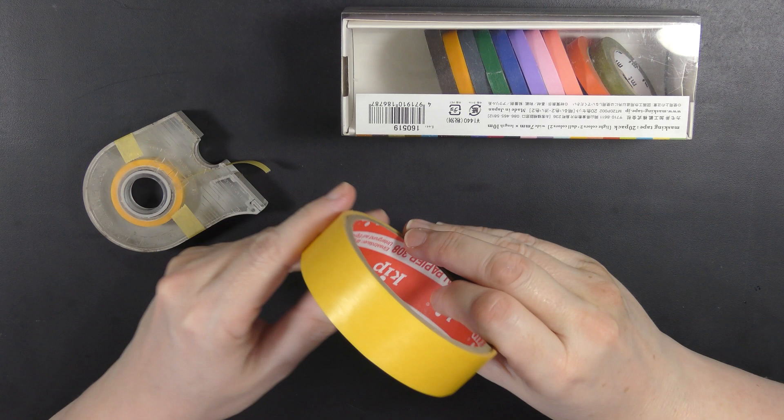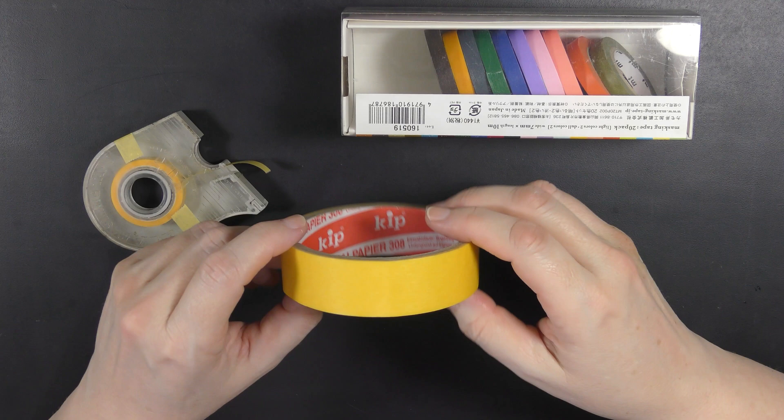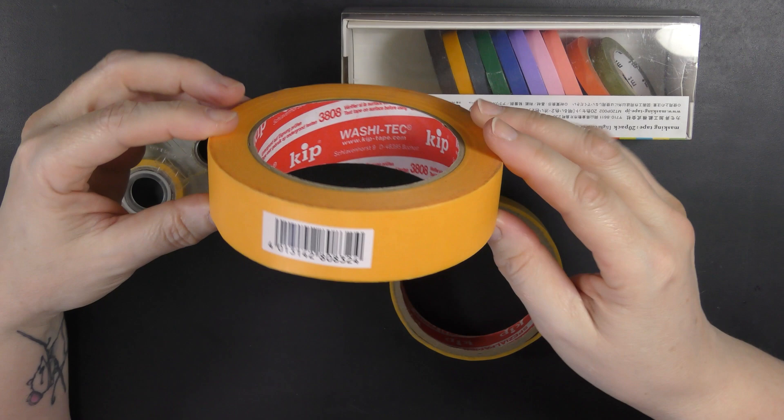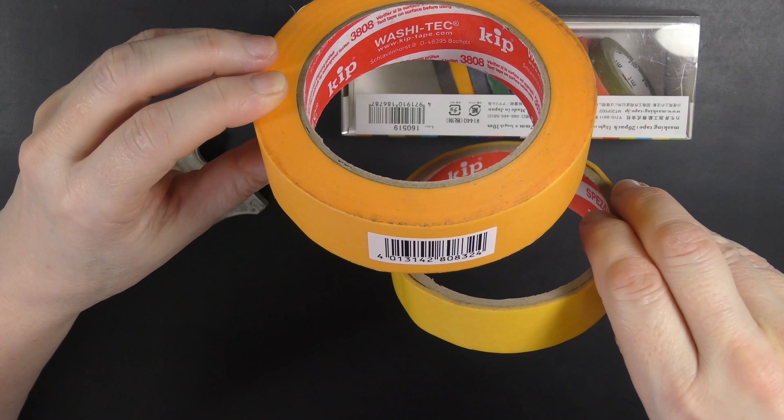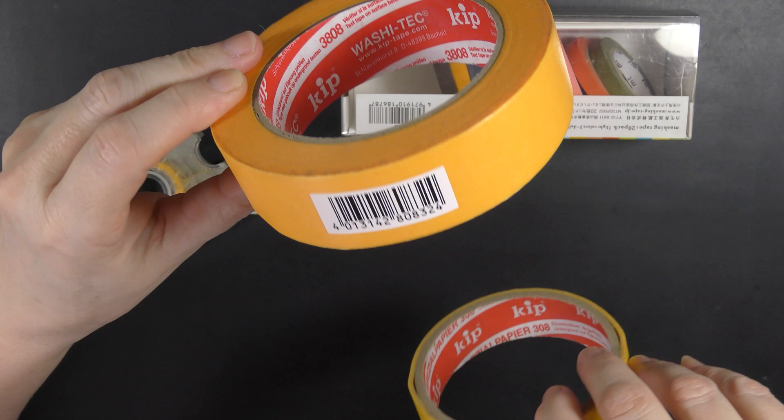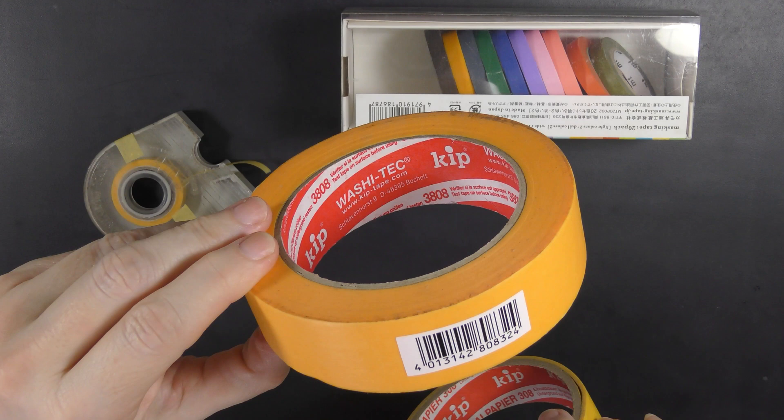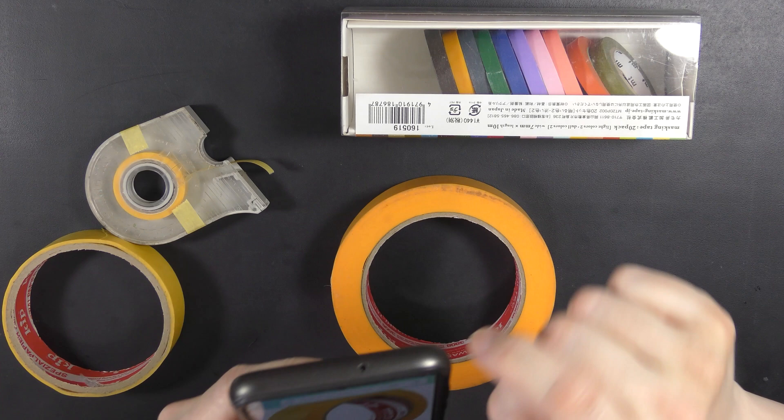Now, this roll's nearly gone, but I thought for the sake of making this little bit of waffle for you that I'd get a new roll. And here it is, KIP. Got this from Amazon and I'll put the link below. But notice now, it's the same stuff. It's 308, although it's now called 3808. It's German, comes from Germany. But now it's got washi tape written on the inside there. Washi tech KIP. Interesting, huh?